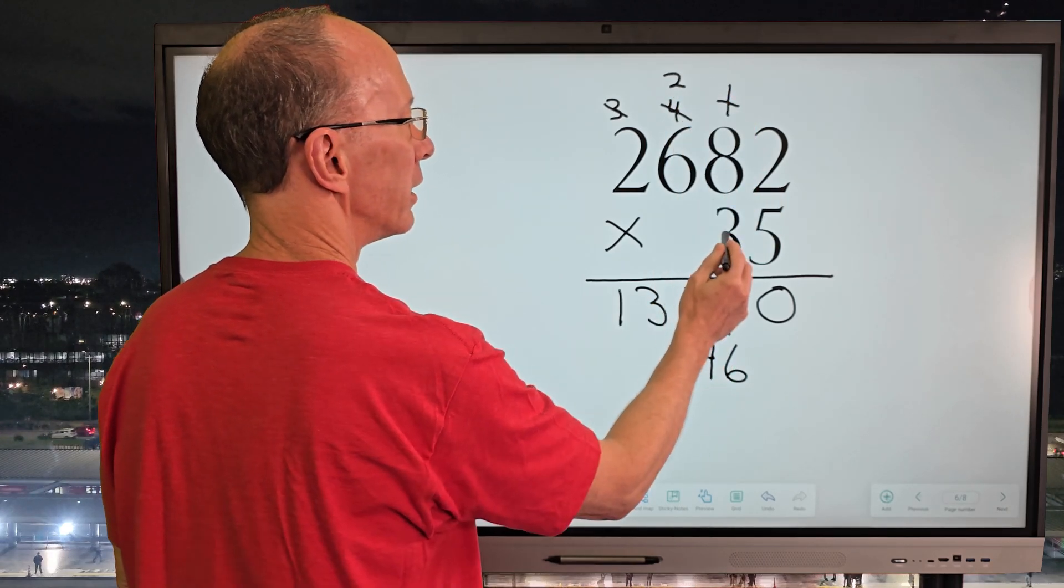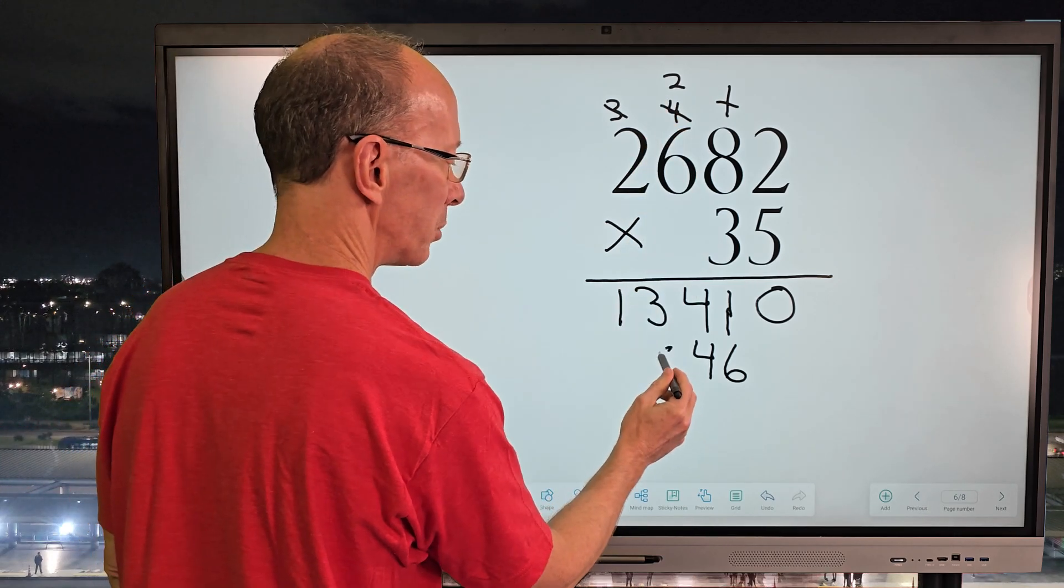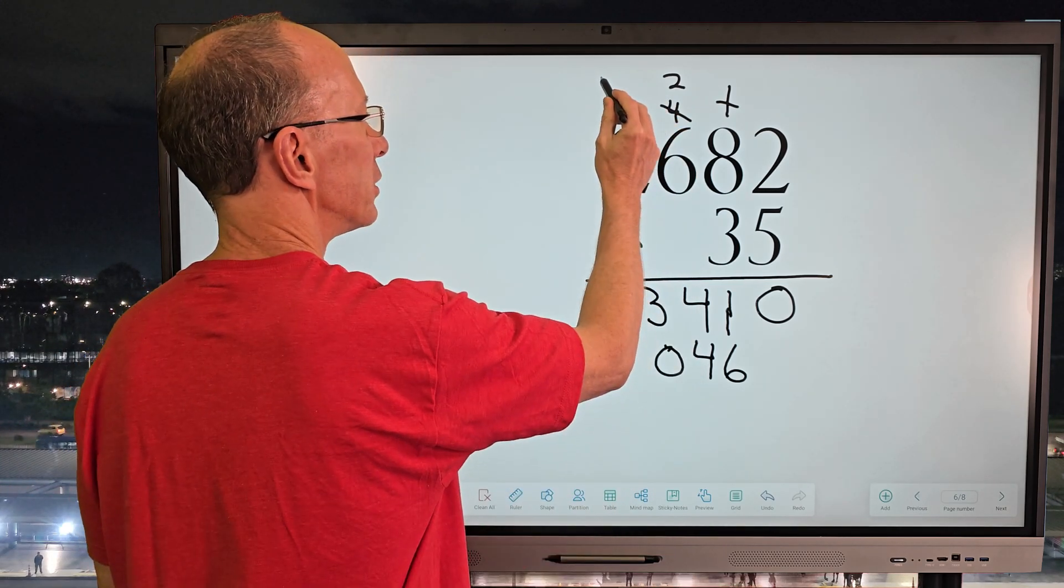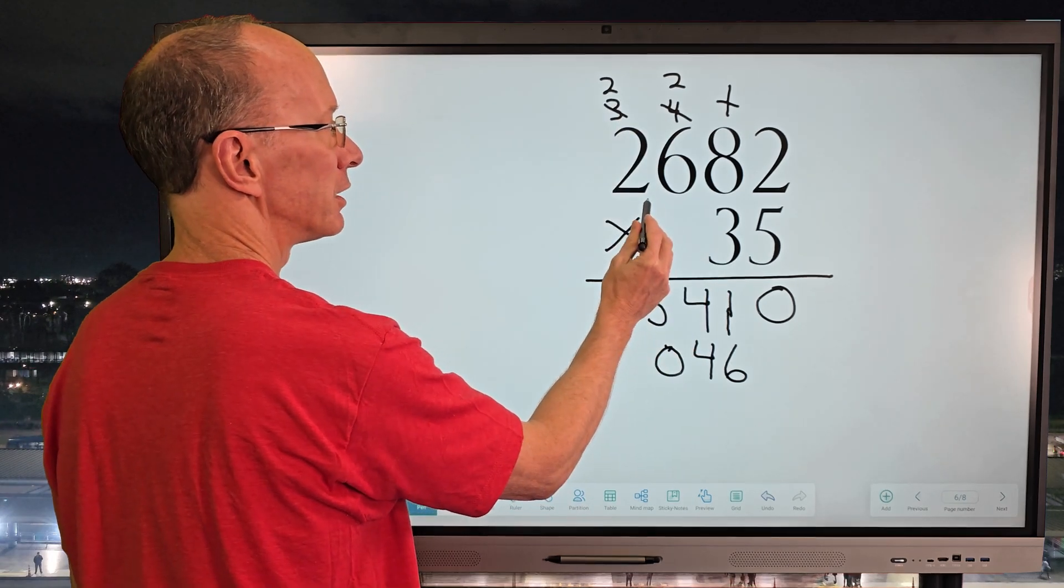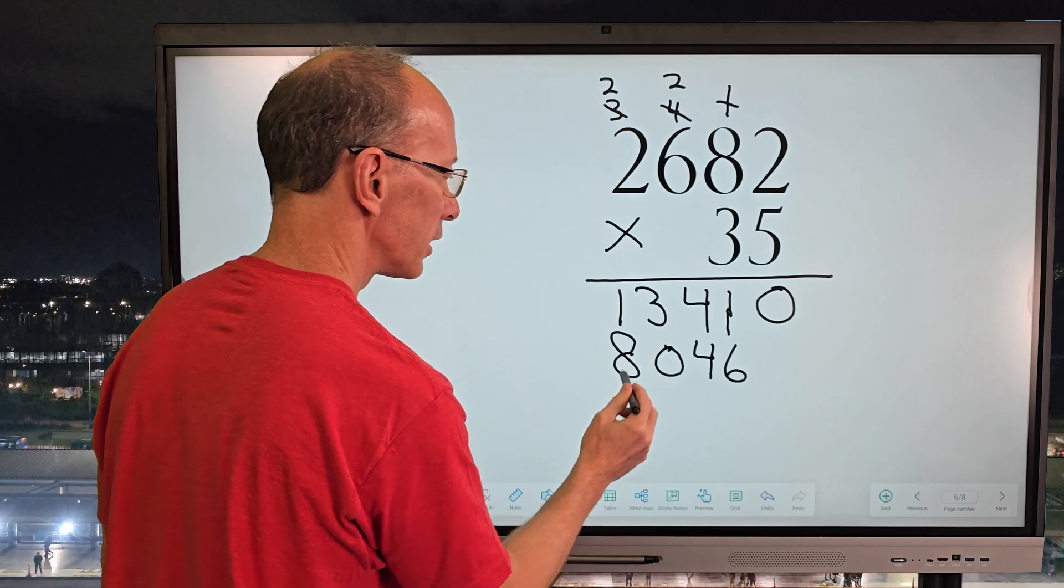And then 3 times 6 is 18. 19, 20. I put the 0 right here. Carry the 2. And then 3 times 2 is 6 plus the 2 would be 8. Just like that.